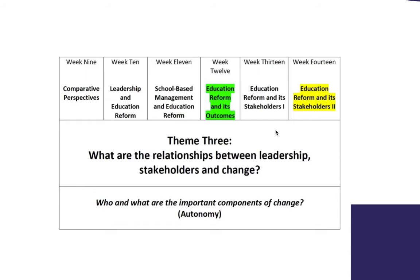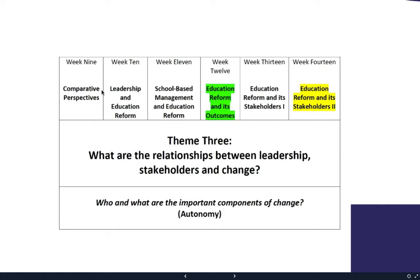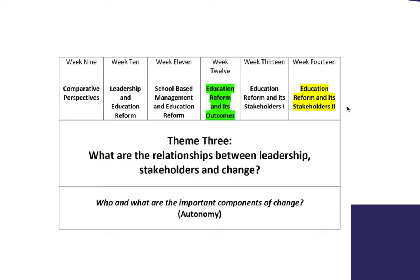The third and final theme covers weeks nine through fourteen — six weeks. Theme three asks: what are the relationships between leadership, stakeholders, and change? Week nine looks at comparative perspectives; week ten, leadership and education reform; week eleven, school-based management and education reform; week twelve, education reform and its outcomes; week thirteen and fourteen, education reform and its stakeholders — parts one and two.